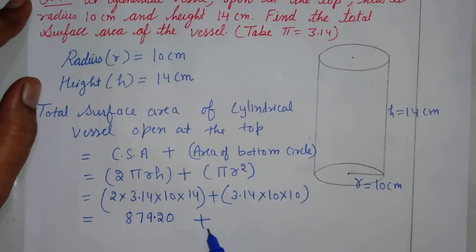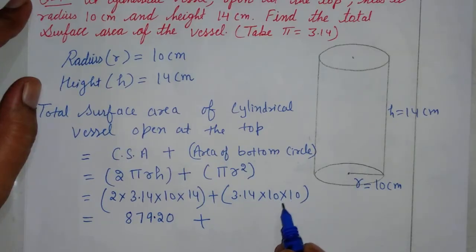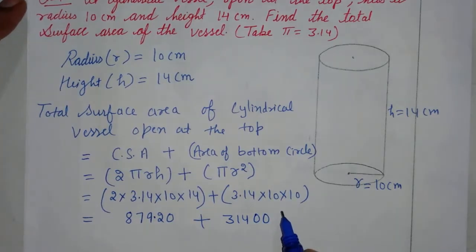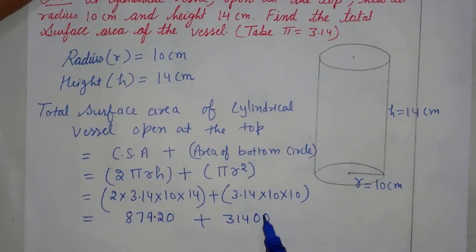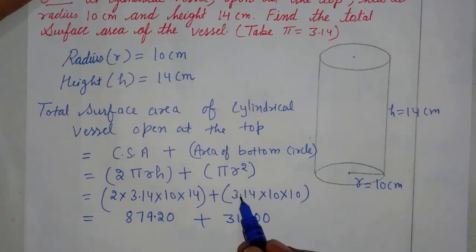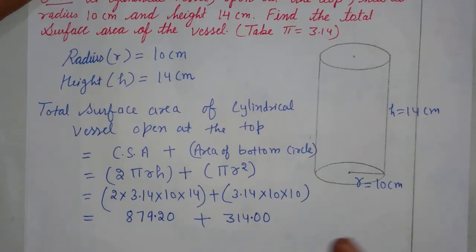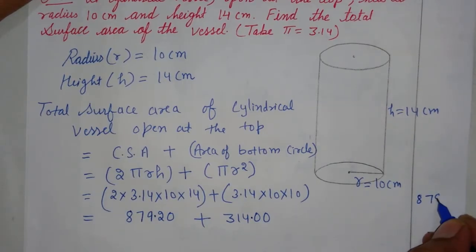So the first part gives 879.20. Plus, for the bottom circle: 3.14 × 10 × 10 = 3.14 × 100 = 314.00. Now we add them together: 879.20 plus 314.00. Here it is area, so units are square centimeters. Adding: 879.20 + 314.00 = 1193.20 square centimeters.